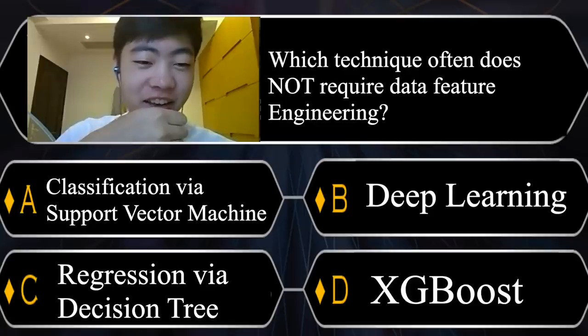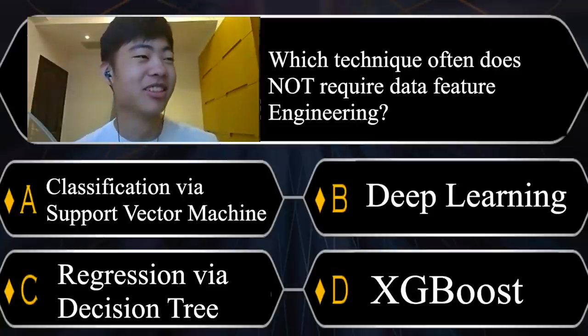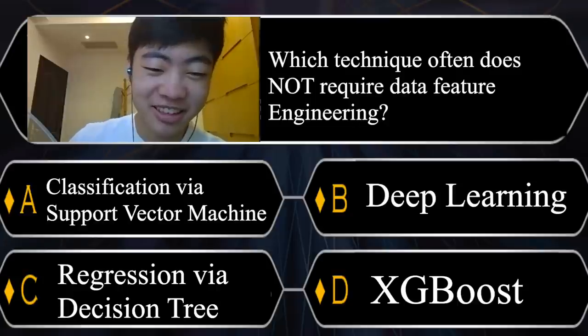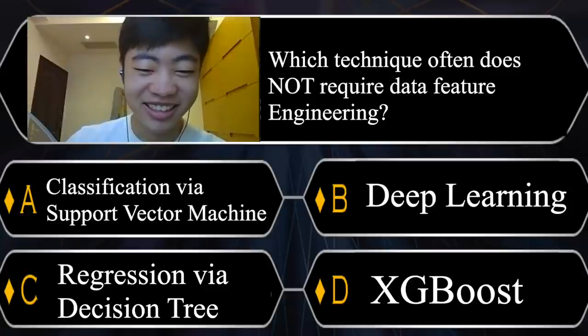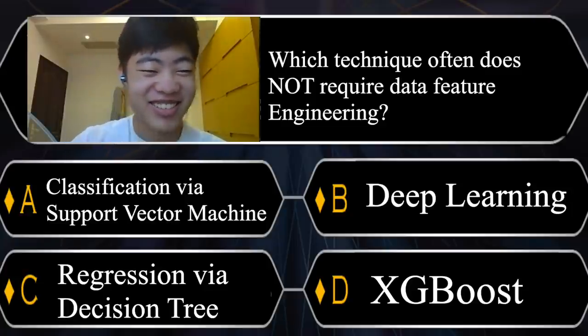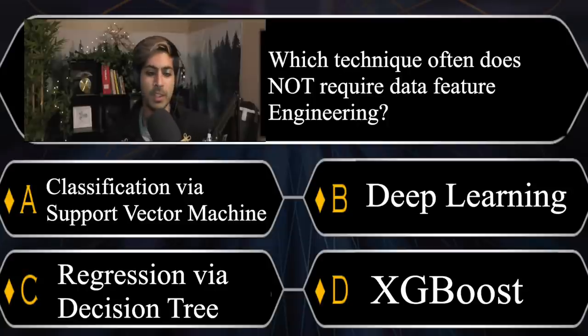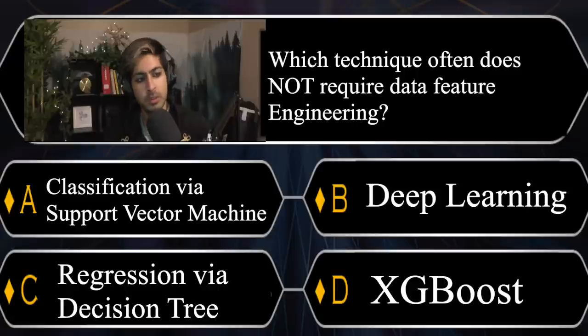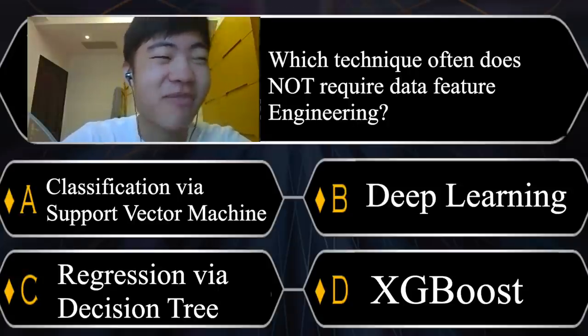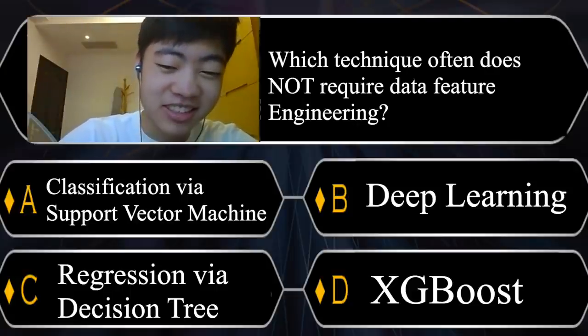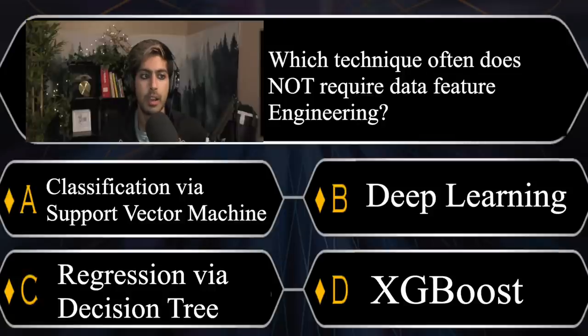All right. We can move to the second one. The second question is, which technique often does not require data feature engineering? Is it A, Classification via support vector machine? B, Deep learning? C, Regression via decision tree? Or D, XGBoost? I don't know any machine learning. This is going to be, well, this is, we're going to modify competitive programming a little bit. Throw some machine learning in there. You remember, you do have three lifelines. So you can use those at any point. That's a very big modification.